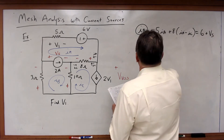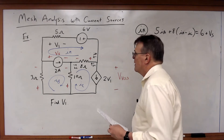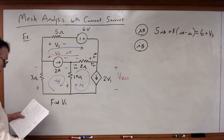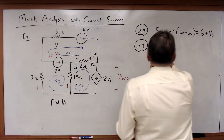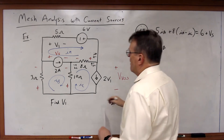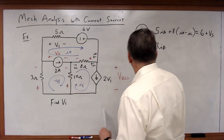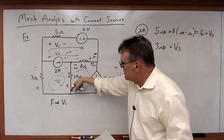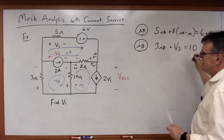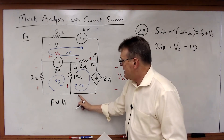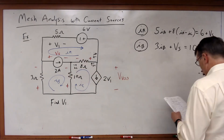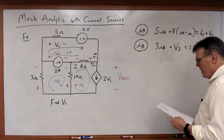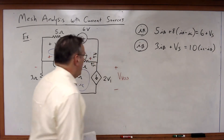For the IB mesh, starting in the corner going around: 3IB is a drop, Vs is a drop, and then the voltage across the 10-ohm resistor is a rise — equal to 10 times (IC minus IB).